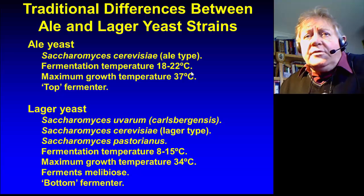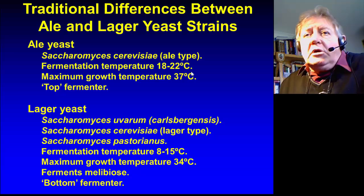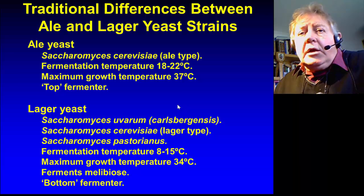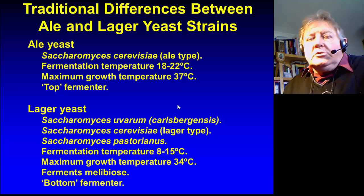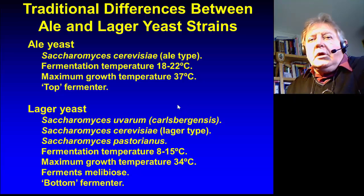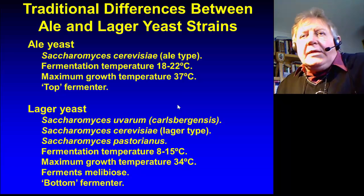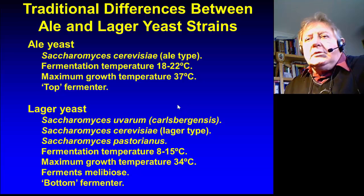Lager yeast — the most important taxonomic nomenclature these days is Saccharomyces pastorianus. That has a fermentation temperature of 8 to 15 degrees centigrade, and a maximum growth temperature somewhat less than Saccharomyces cerevisiae at 34 degrees centigrade. It ferments the disaccharide melibiose, which consists of glucose and galactose. Ales cannot metabolize melibiose because they don't contain the MEL genes, which are important for the enzyme alpha-galactosidase used for hydrolysis of melibiose. Lager yeasts are bottom fermenters — the yeast descends to the bottom of the fermenter as flocs and is scrubbed and reused in subsequent fermentations.